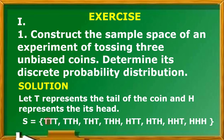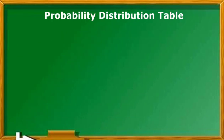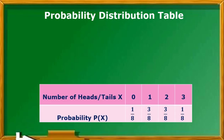We have triple tails, a double tail and head, a tail-head-tail, a tail-head-head, and so on. So there are 8 possible outcomes. Now let us show the 8 possible outcomes in the sample space S together with its probability distribution in a tabular form.